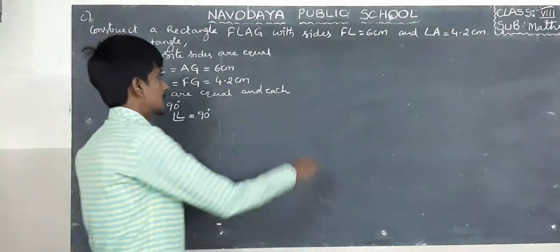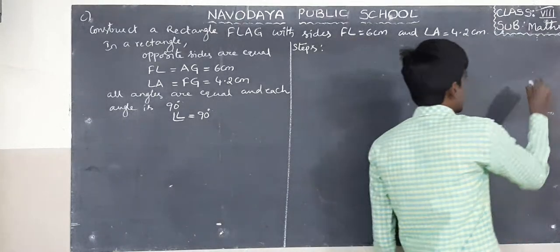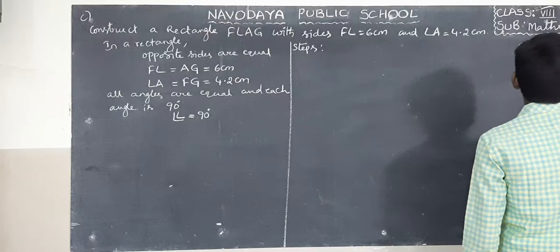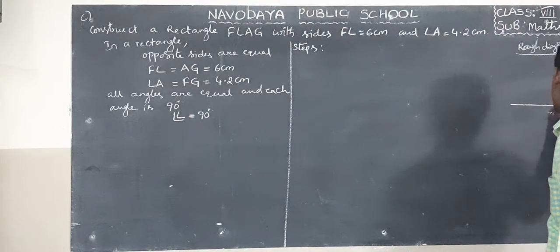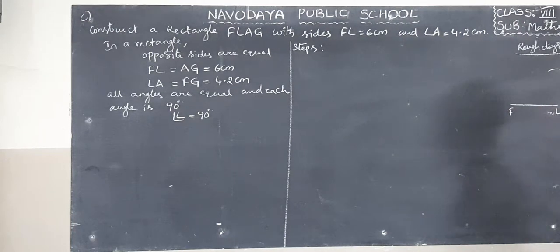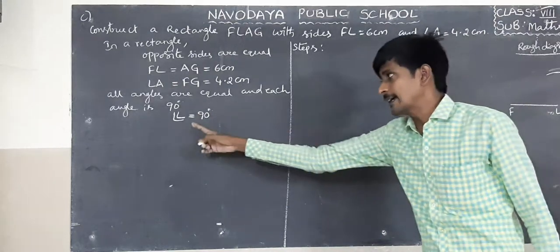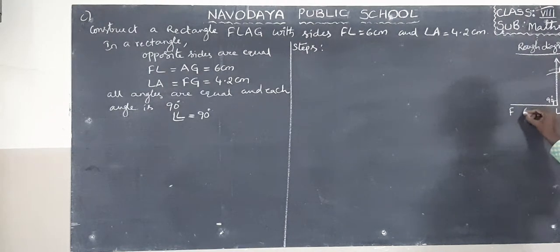Now start the construction. Write the steps. First, draw the rough diagram. FL equals to 6 centimeters, LA equals to 4.2 centimeters. Draw a line segment FL, then with L as center draw LA equals to 4.2 centimeters. Angle LA equals to 90 degrees. So this is FLA: FL equals to 6 centimeters, LA equals to 4.2 centimeters.